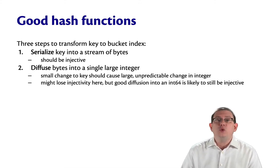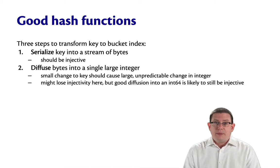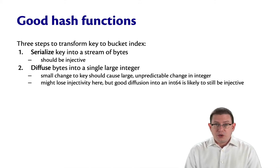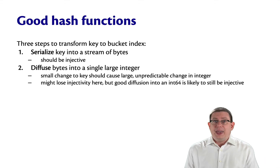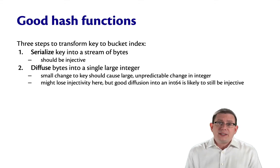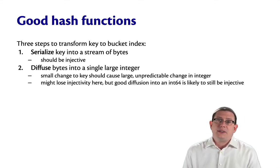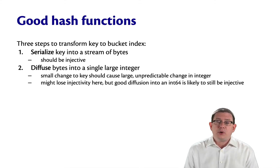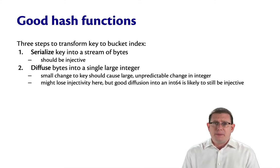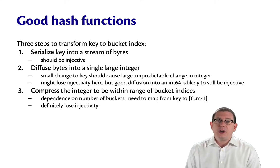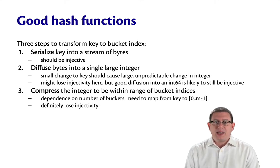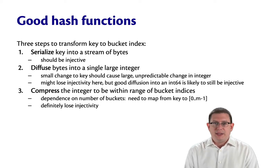We might necessarily lose injectivity here — it depends on the size of the integer we're diffusing into. If it's into an int64 or even an int63, that's still likely to be injective unless the inputs we're using are massively big. The third and final step is to compress that integer to be within the range of bucket indices for the particular table that we're using.